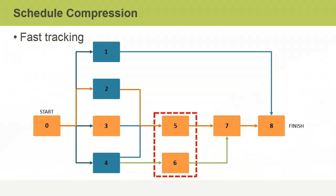In summary, applying leads where possible during schedule development ensures your schedule is as short as possible. Two schedule compression techniques that will also help shorten a schedule are crashing and fast tracking.